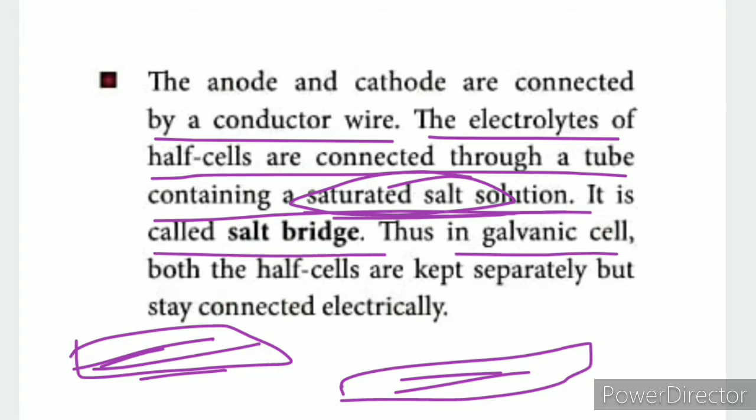This is the galvanic cell. The half-cells are kept separately but stay connected electrically. This is how the two types of cells are connected.